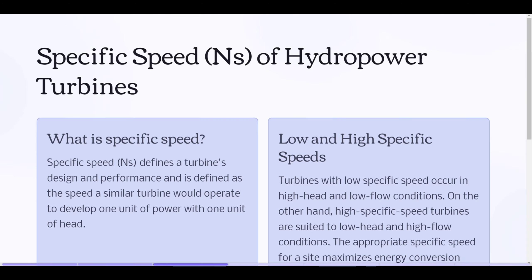Specific speed of hydropower turbines — What is specific speed? Specific speed defines a turbine's design and performance, and is defined as the speed a similar turbine would operate to develop one unit of power with one unit of head.